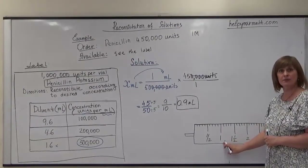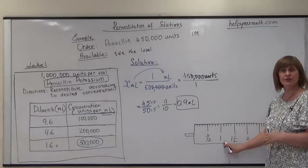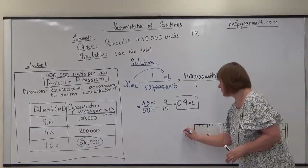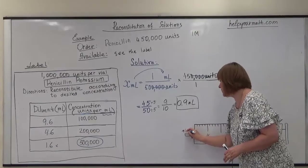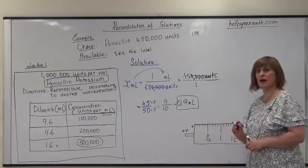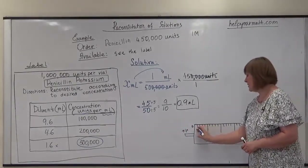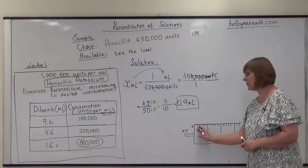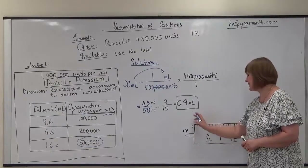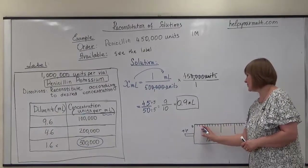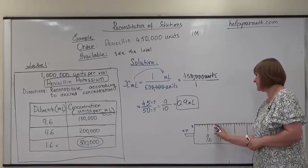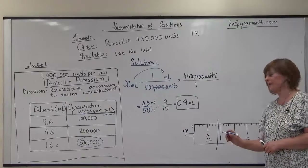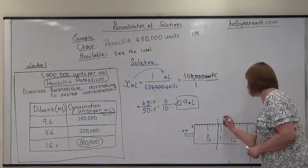Now we need to shade the answer on the syringe. This mark is 1 milliliter, and we understand we need to shade less than 1 milliliter. Starting from the tip of the syringe — that is our zero. The syringe calibration here is in tenths, so we count 9 units: 1, 2, 3, 4, 5, 6, 7, 8, 9. We are just one tenth away from 1 milliliter, and this is 0.9 milliliters.